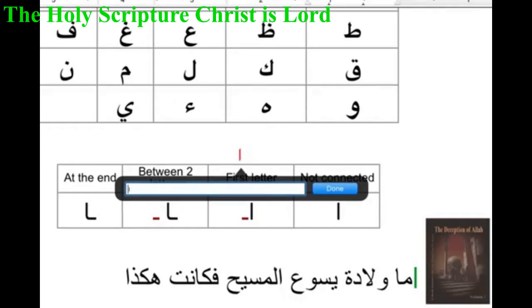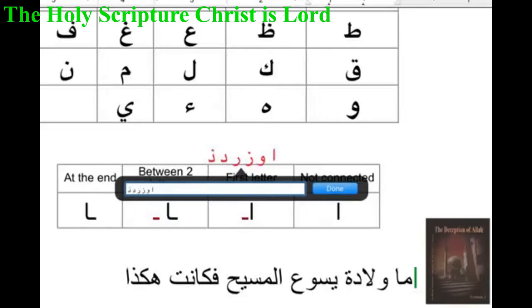So we have: alif, then wa, za, ra, da, and dha. Those letters, as you see, don't accept connection from the left side.